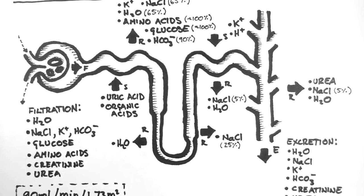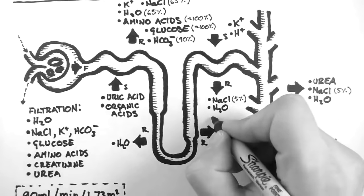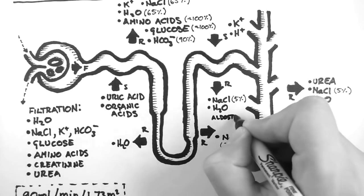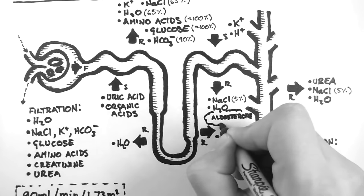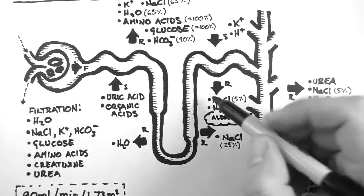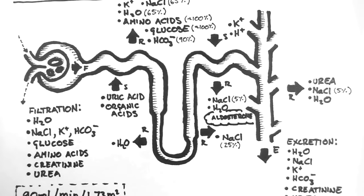One last thing I would like to mention is that there are two major hormones which control the rate of water excretion. These are aldosterone, which is part of the renin-angiotensin-aldosterone system, which you can find out more about in the RAAS handwritten tutorial. And this acts on the distal tubule and increases the rate of water reabsorption.